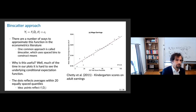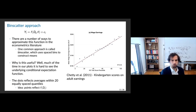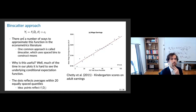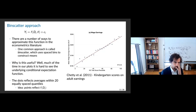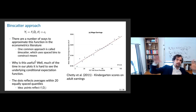What if we wanted to flexibly fit a function for the relationship between D and Y? We have some data D, some outcome Y, and we want to fit a relationship between the two without saying it's just a line. There's a big econometrics literature on this. What has really blown up for applied people is something called bin scatter — using spaced bins to construct the means. A lot of times in our plots it's hard to see the underlying conditional expectation function. When I show all the data it's just a mess of noise.